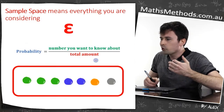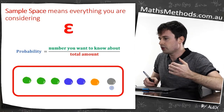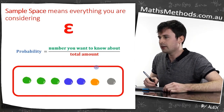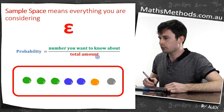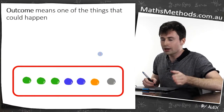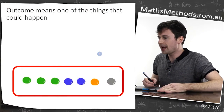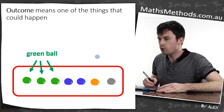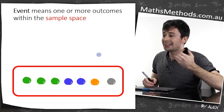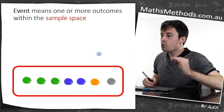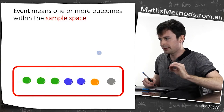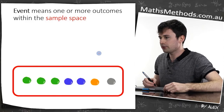The sample space is the total amount — it's everything that you're considering. An outcome means one of the things that could happen: a green ball, a blue ball, an orange ball, or a grey ball. An event means one or more outcomes within the sample space.